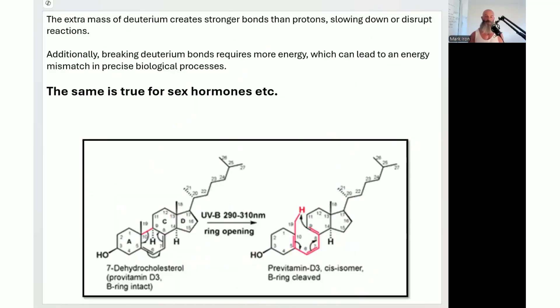The issue with testosterone production, vitamin D production, anything that our body uses cholesterol for, if you've got deuterium in there, let's say we're trying to make testosterone and you've got that deuterium there, it can't break the bond very easily. Two issues: the extra mass from deuterium creates stronger bonds, slowing down or disrupting the reaction. To break these bonds requires more energy. We've got to make sure that your deuterium is about 130, maximum 140 parts per million. When you get north of 150, you've got deleterious health effects, inflammation, stress, cancer, all these things show up.